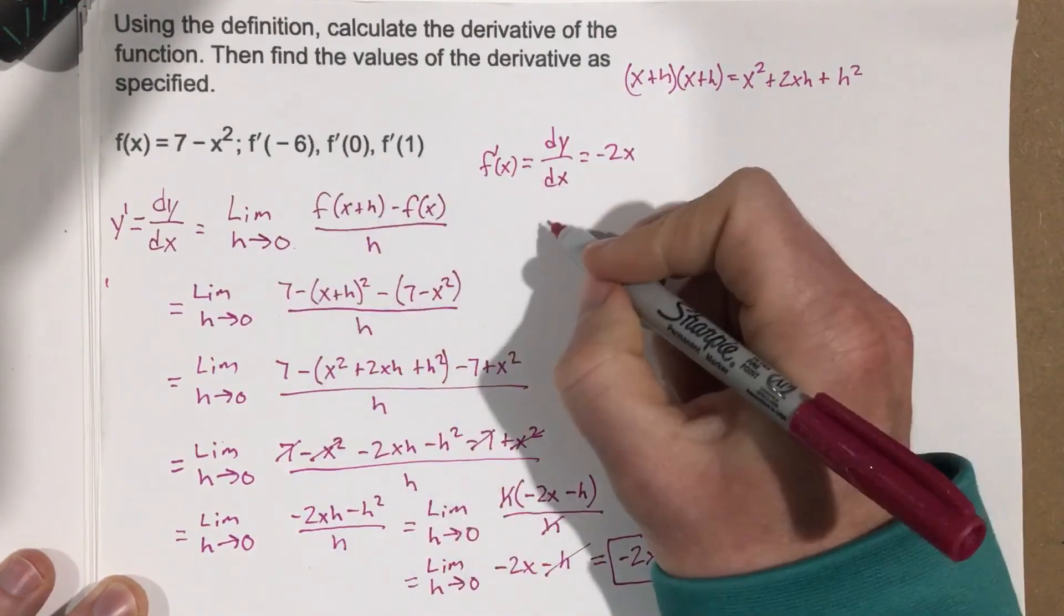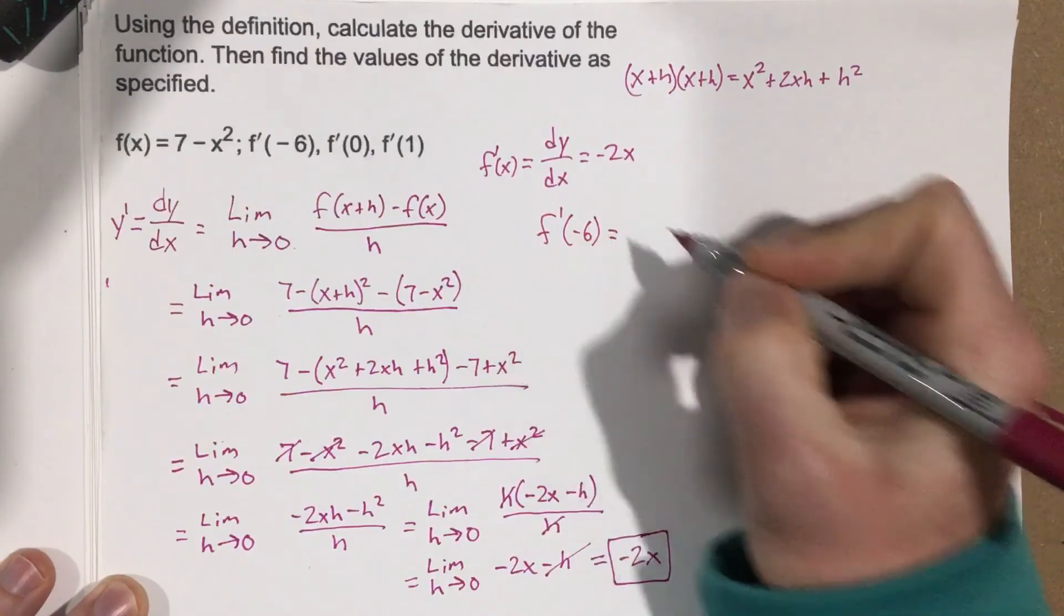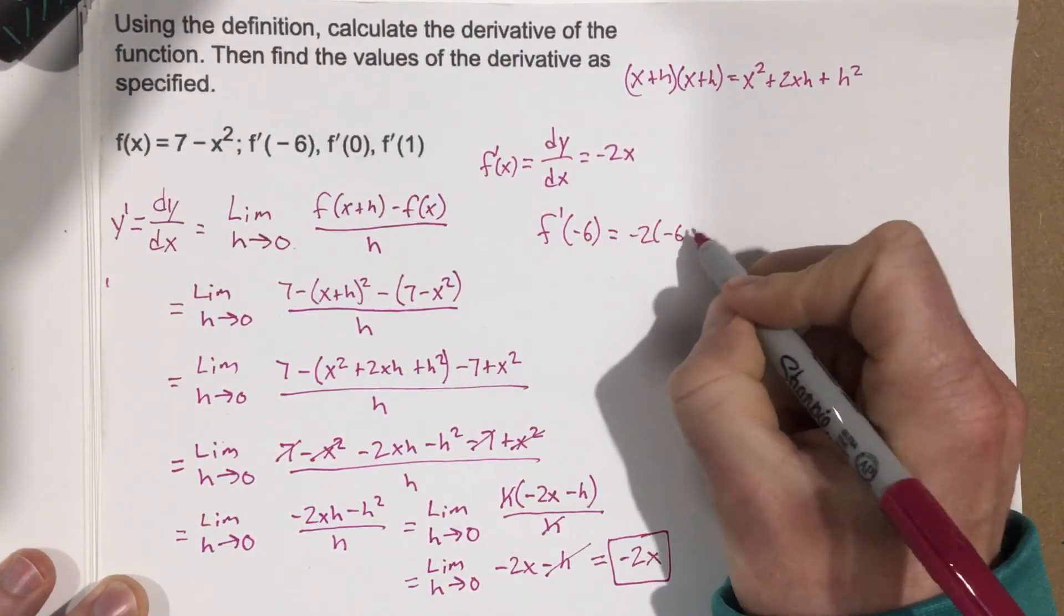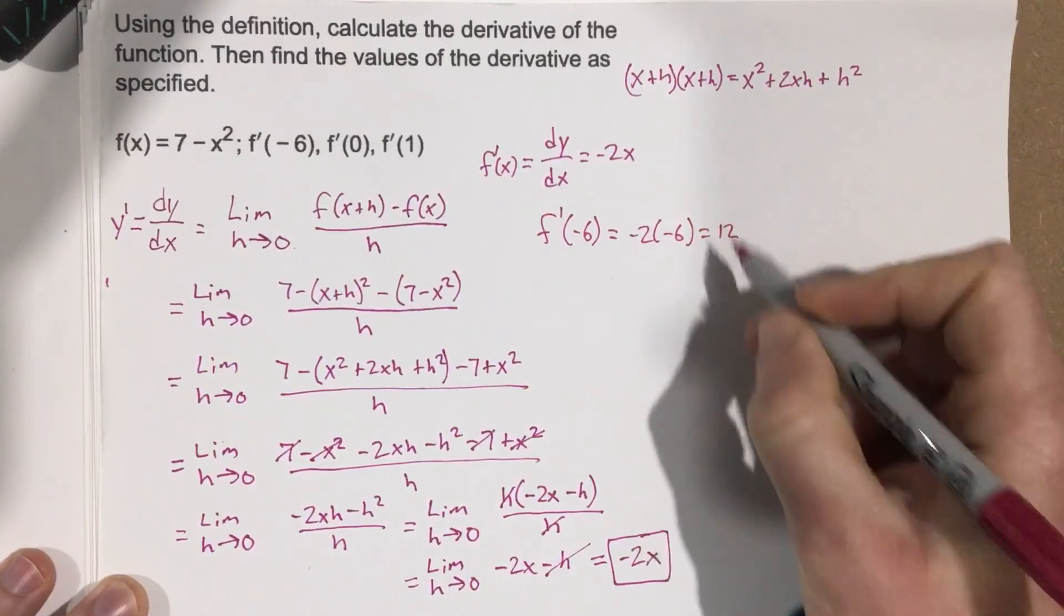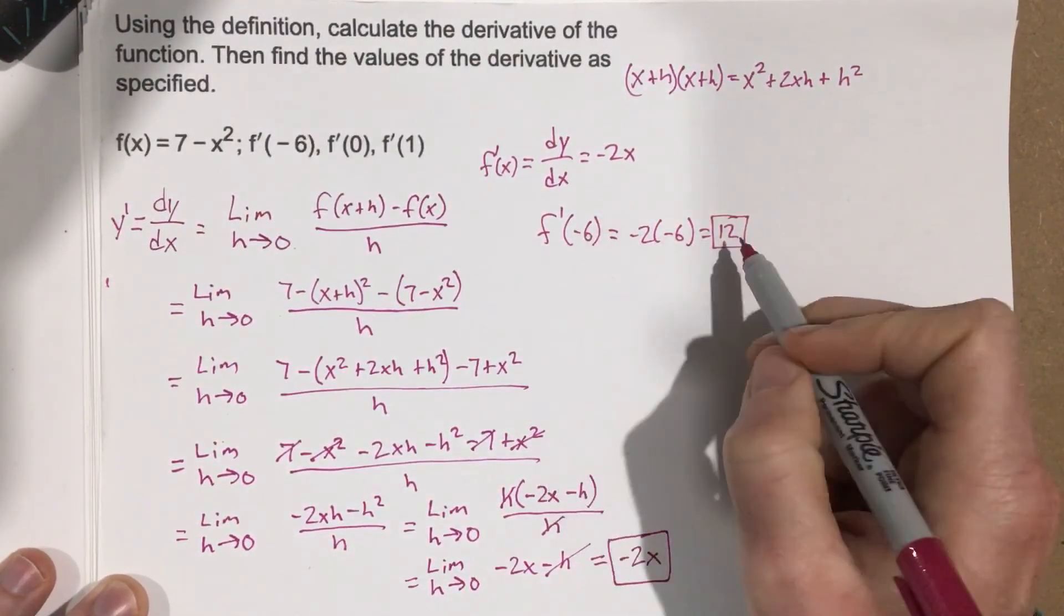We're going to find f prime of negative 6. When we plug negative 6 in, we get negative 2 times negative 6, which is 12. So, that means the slope at x equals negative 6 is 12.